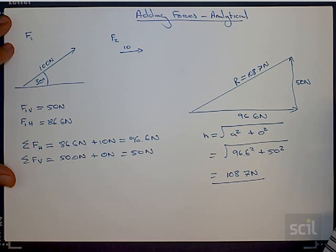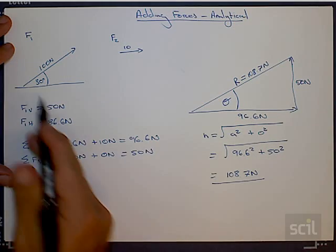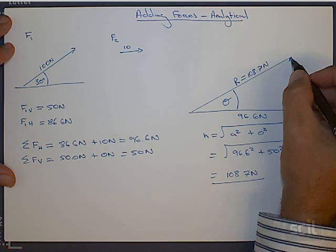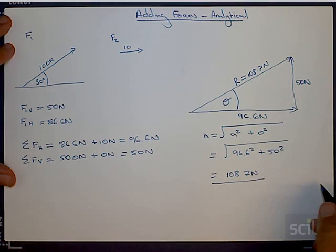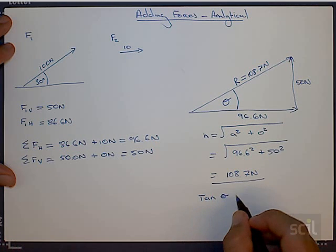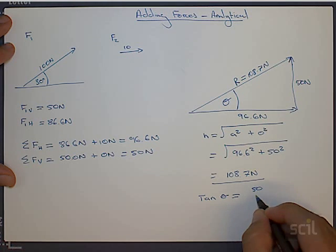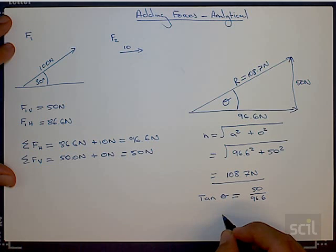And that there is the magnitude of our resultant force. To calculate what this angle is—because obviously it's not at that 30 degrees, it's going to be a little bit shallower of an angle because it's going a little bit further in the right hand direction—we can use this trig again.